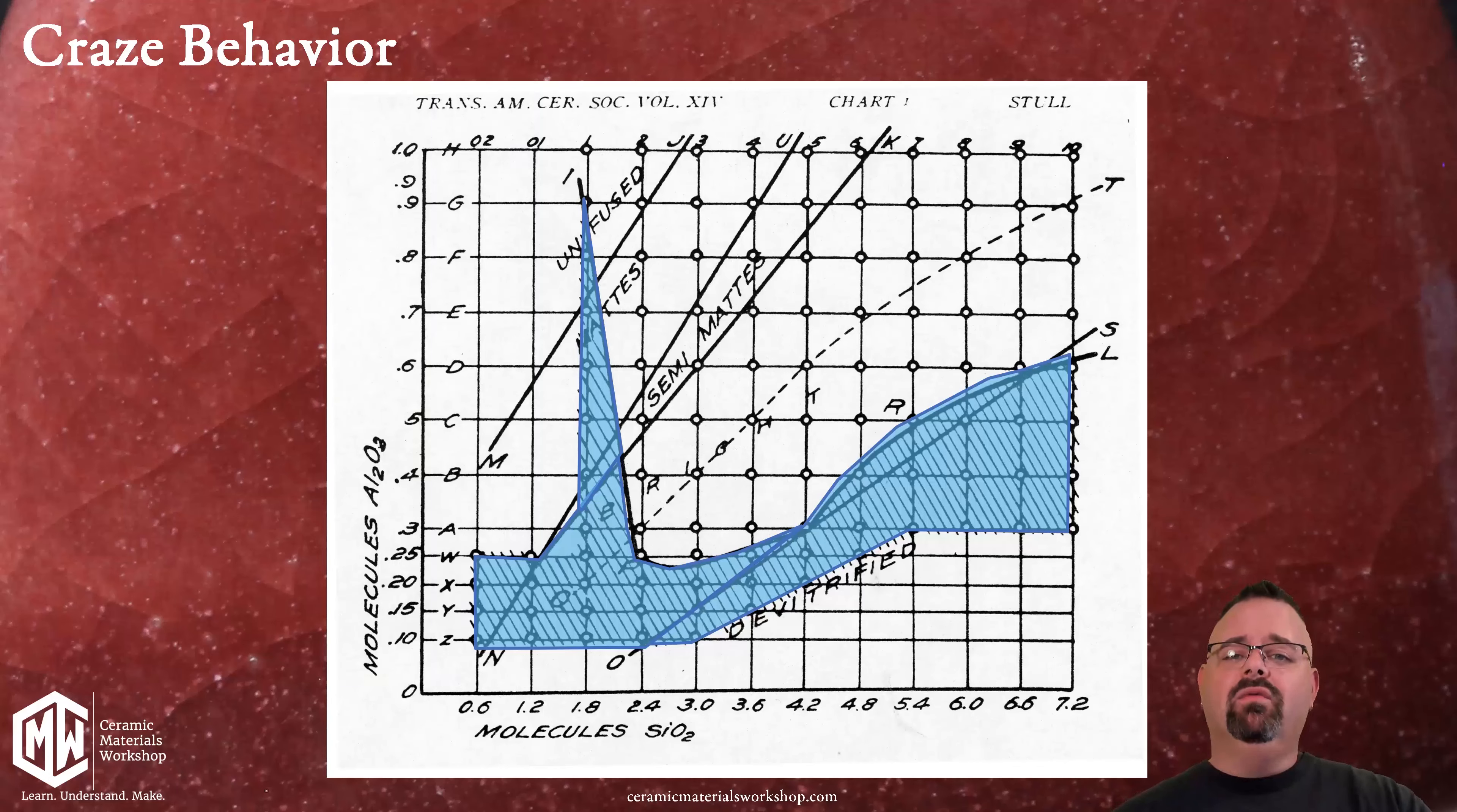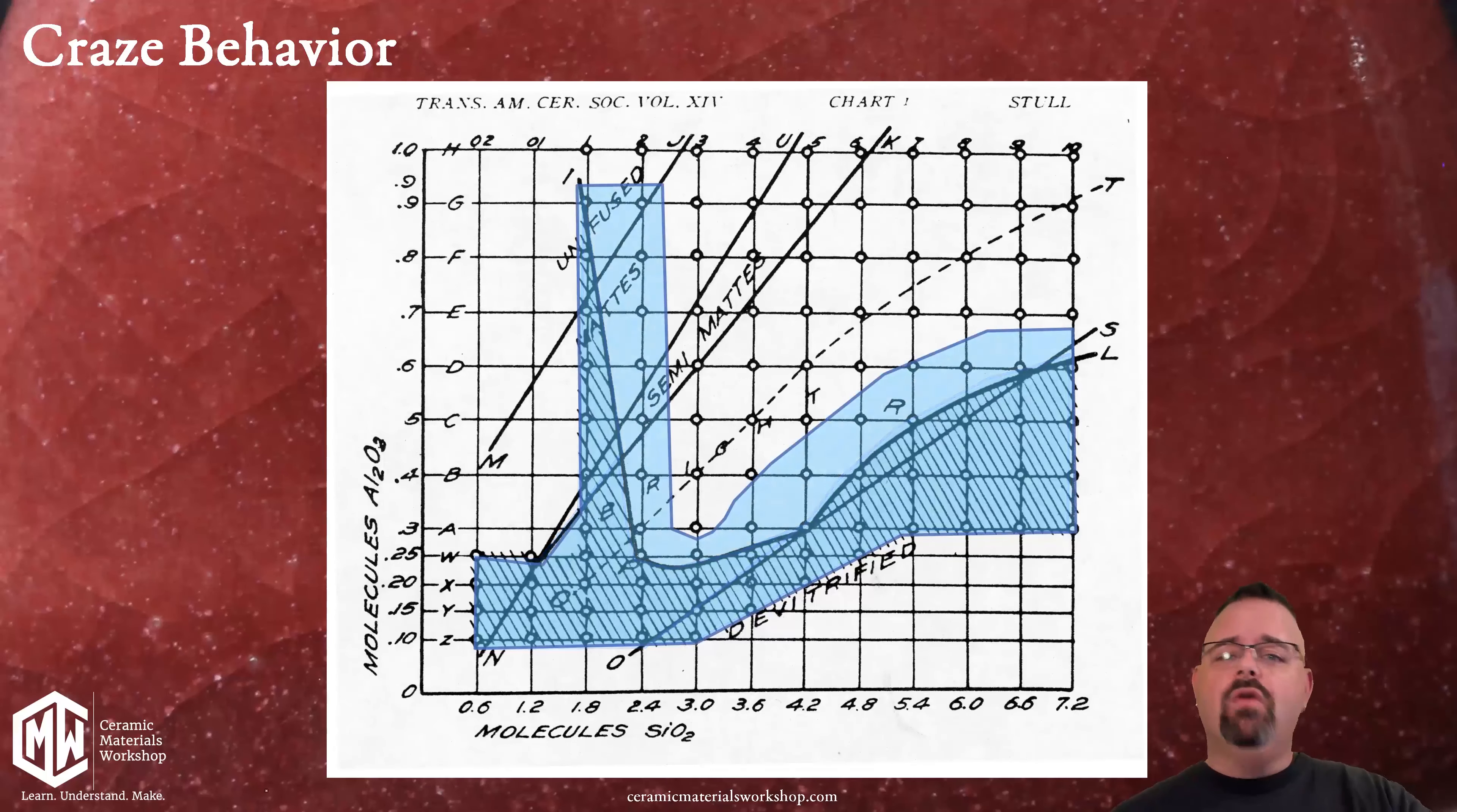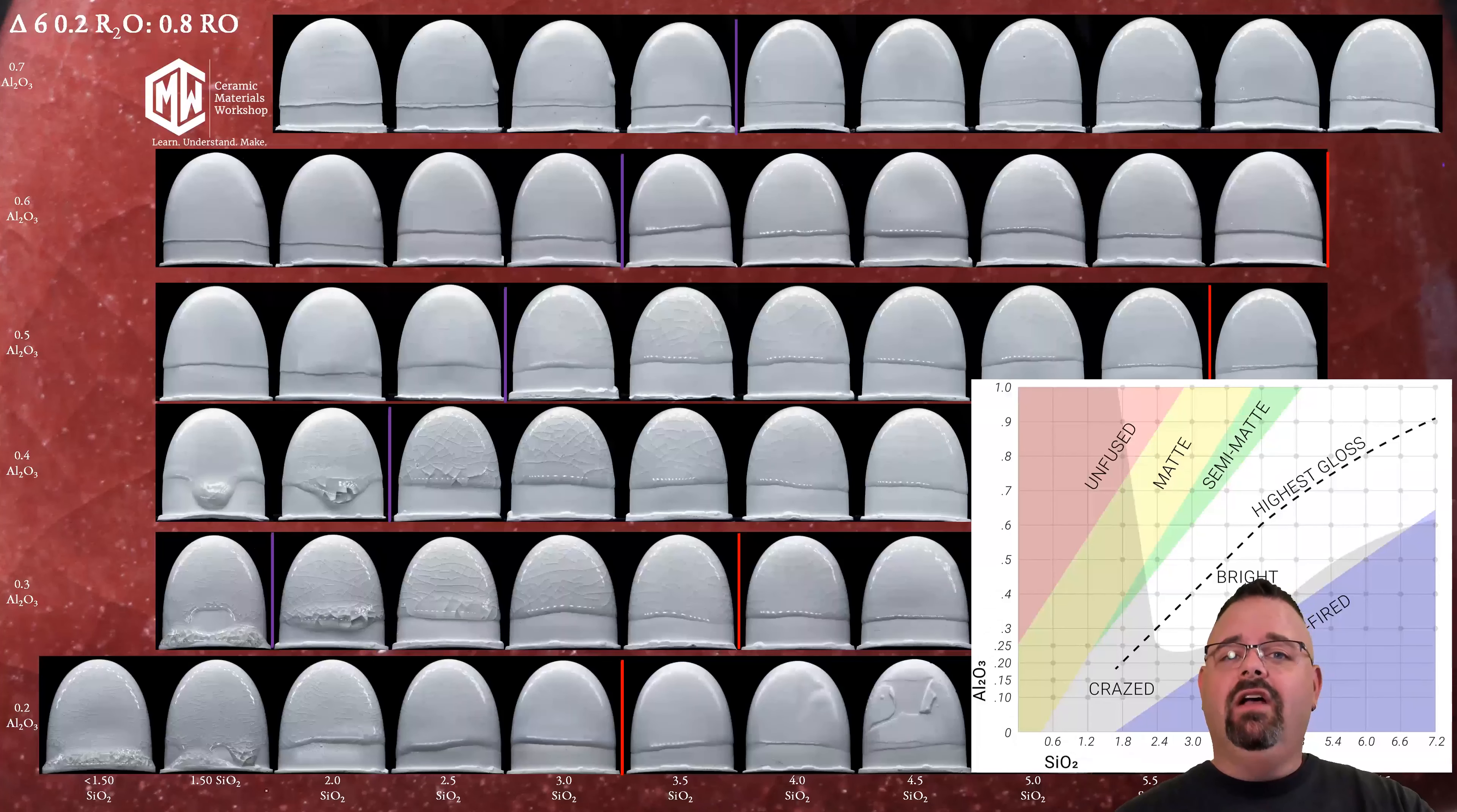Now this was where the crazing region fell on Stull's clay body but the crazing region can move in and out depending on what your clay body is. But the important detail is that the shape of the crazing region stays the same. And again this isn't theory this is real because we return to my recreation of the map.